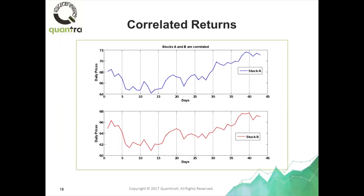If you look at it for a long period of time — eight years — it just keeps going down. So despite the fact that Coca-Cola and Pepsi move up and down half the time each day, they are not cointegrated. If you form this long-short portfolio, the spread is not stationary. You cannot trade it in a mean-reverting strategy. So the two concepts are different.